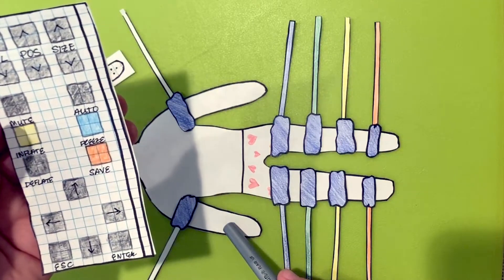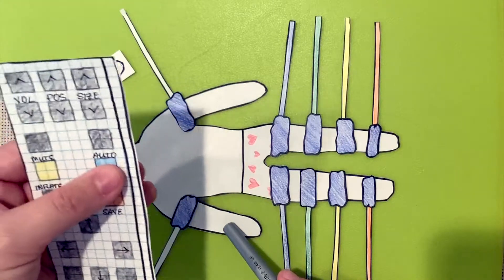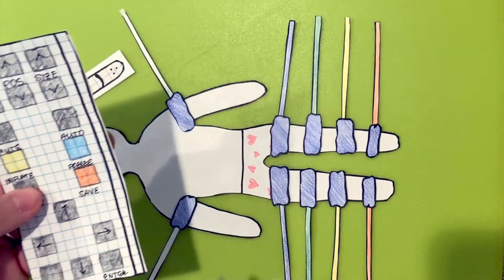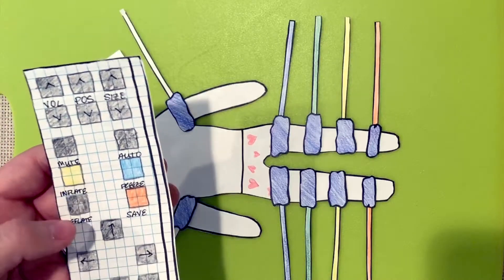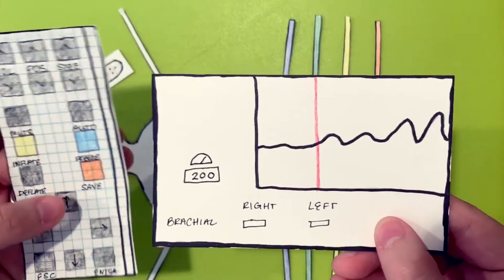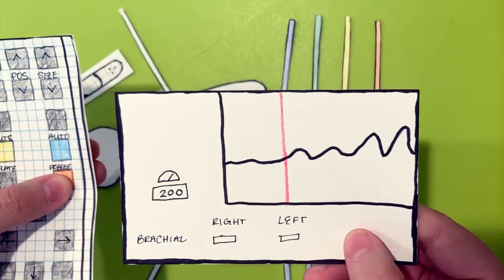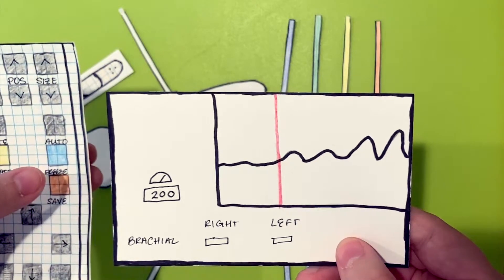The cuff will bleed back on its own. When the signal returns, freeze the frame and quickly deflate the cuff. You will then scroll back to the first pulse and acquire the pressure with the save button on the remote. This reading is the systolic pressure.